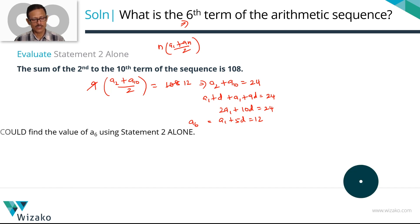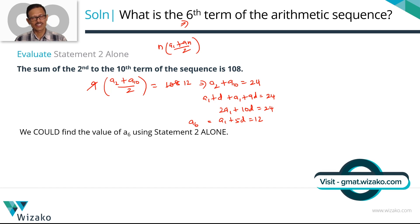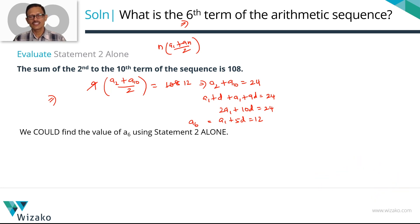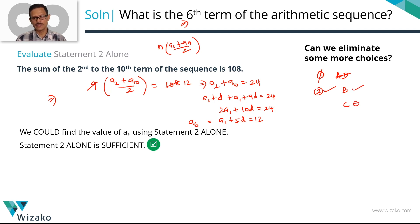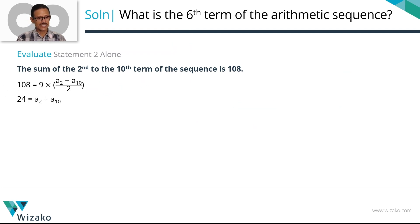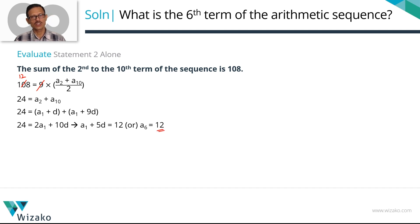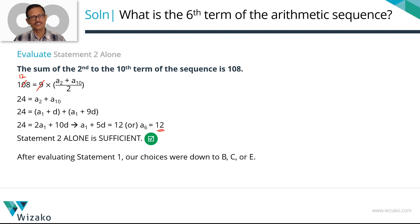Statement 2 has given us the answer: a_6 = 12. So statement 2 alone is sufficient. Since statement 1 was not sufficient (eliminating A and D) and statement 2 alone is sufficient, we go with choice B. Rule out choices C and E. The correct answer is choice B.